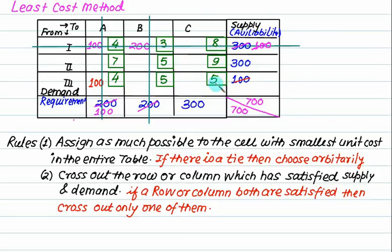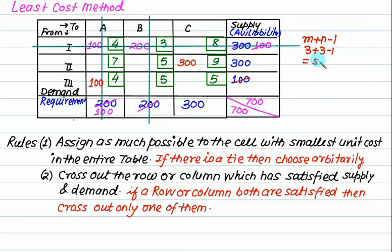The cost here is 5 but we can't allocate here because there is no capacity. Can we allocate 300? How many allocations are there? One, two — this one is m plus n minus one. M is 3, n is also 3, so m plus n minus 1 equals 5. But how many allocation cells are there? One, two, three, four — so allocation cells are 4. This is not equal to 5, so this is not an initial basic feasible solution.